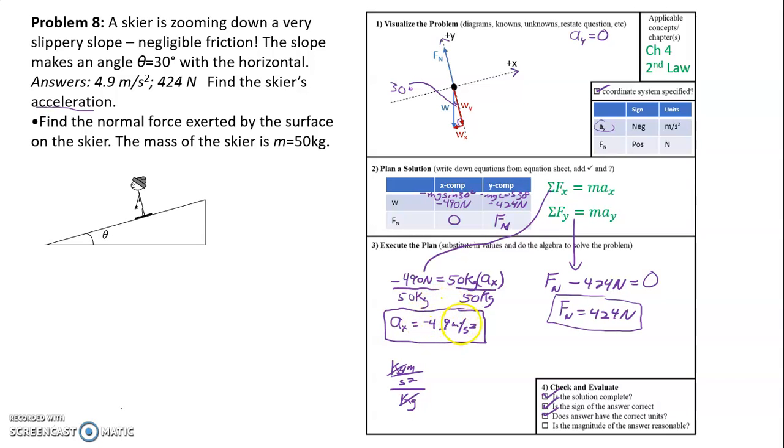And is the magnitude of the answer reasonable? Well, here we didn't really know what it would be, but it makes sense that it's less than 9.8. Since the skier is here, gravity is what's pulling the skier down the slope, but only a part of gravity. And so there's no way that the skier could be going down with an acceleration greater than 9.8 unless there was some sort of propulsion. So a rope pulling him down or a rocket pushing him down, something like that. So that's reasonable. 424 is less than the weight of 490. So if the skier was on level ground, the normal force would be 490 newtons, which is just 50 times 9.8. But in this case, it comes out less than that, so that's also a reasonable value.